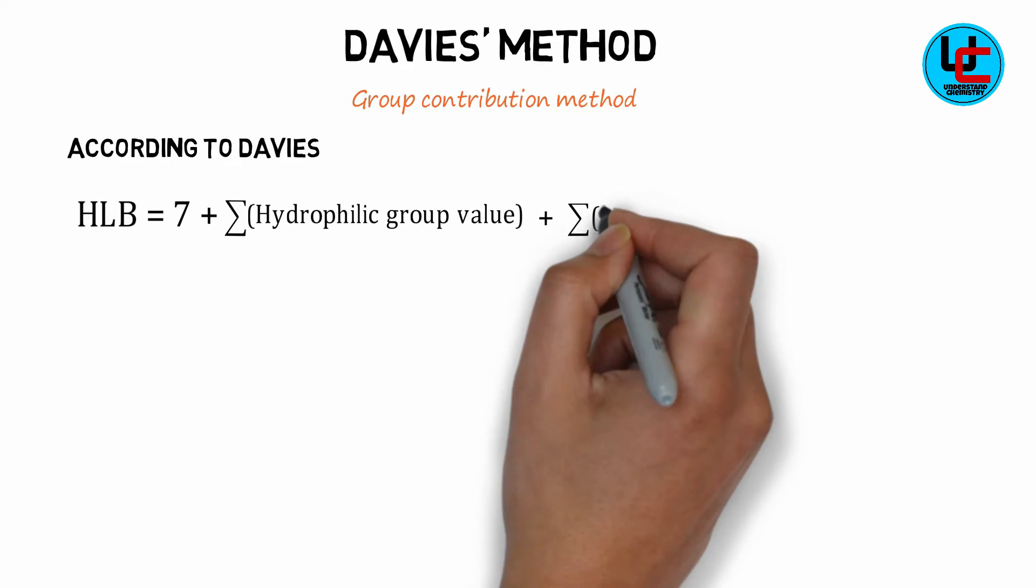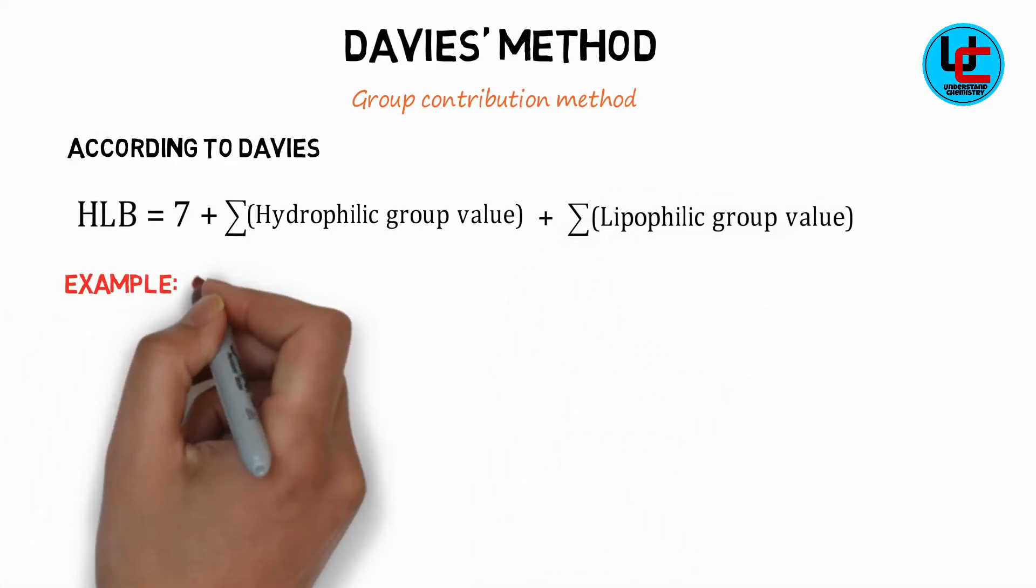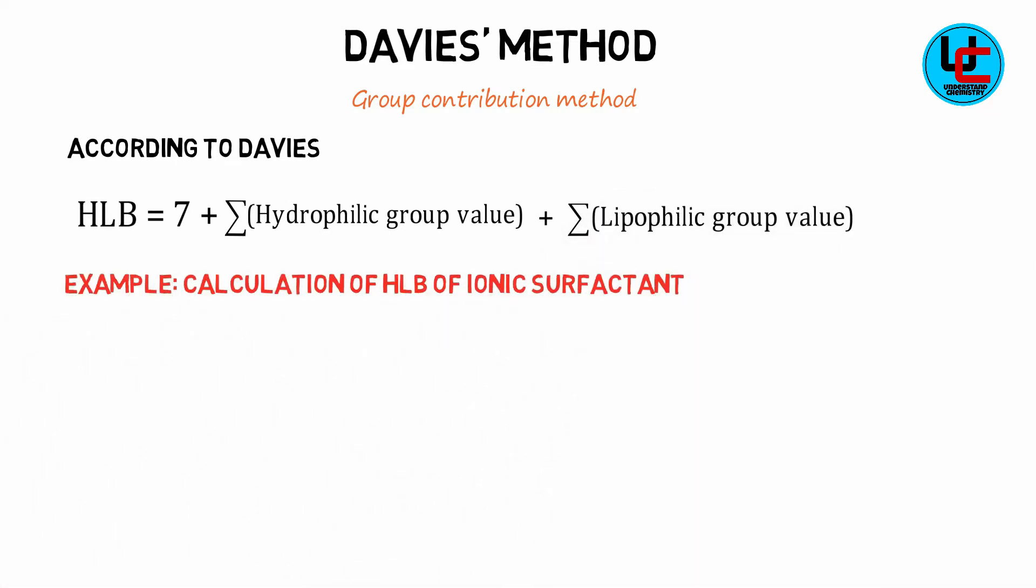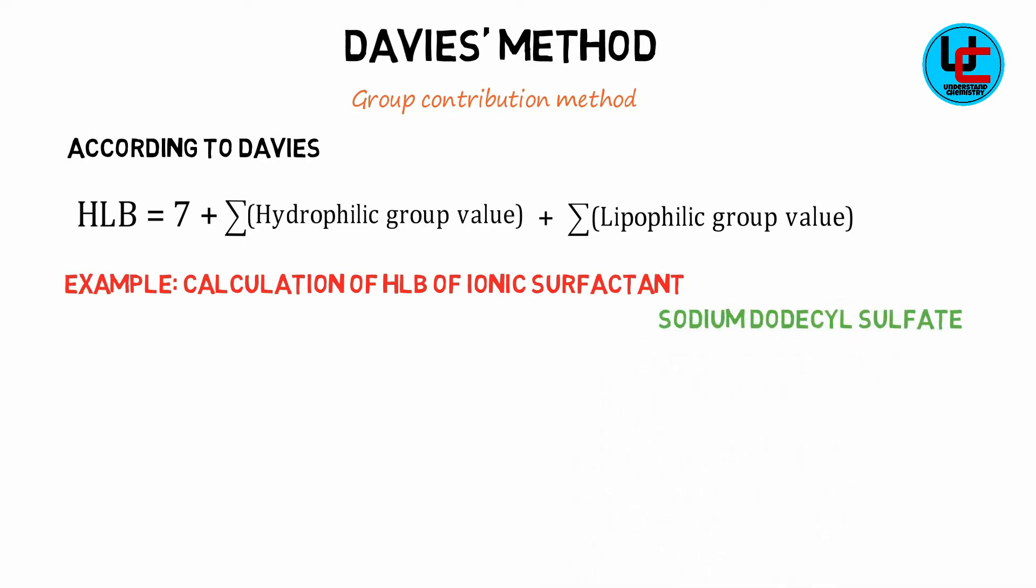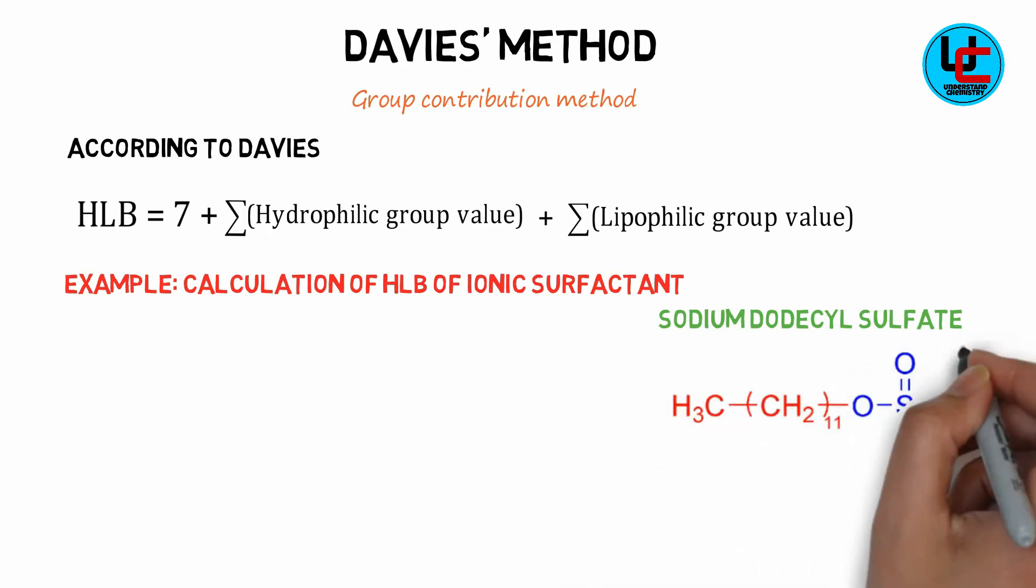Now with the help of an example we will see how Davies formula works to calculate HLB. Consider an example of an ionic surfactant, sodium dodecyl sulfate, in which a 12 carbon chain is attached to sodium sulfate.